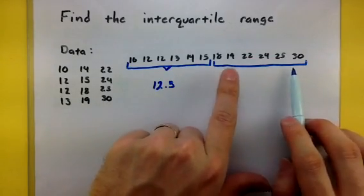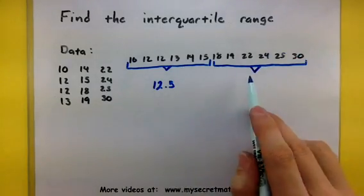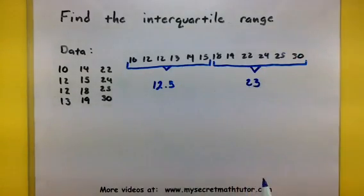Similarly, when I find the median of the upper half, I need to take the average of 22 and 24. And that'll be 23.